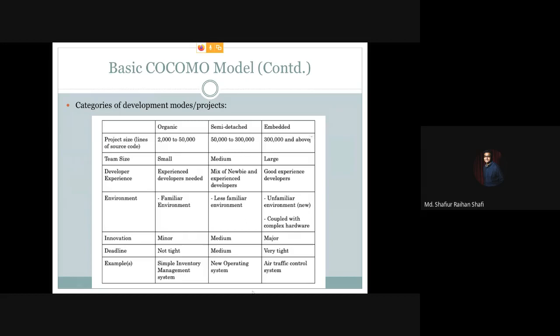The amount of innovation demanded in the semi-detached mode is medium — a medium level of innovation is required. The deadline is also medium, though it can still be tight. If the project matches these characteristics, its category is semi-detached. Examples of this type of project include a new operating system or a new utility system like a compiler.